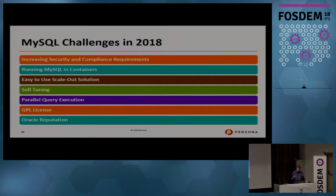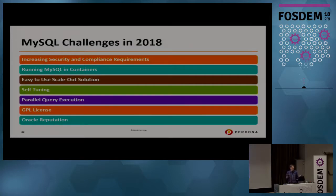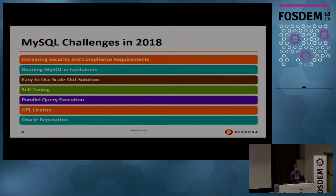We still don't have an easy scale-out solution — MySQL sharding is as painful now as it was 10 years ago. There are some new developments like Vitess designed to make it less painful, but they aren't widely adopted yet. Parallel query execution is still not where it needs to be and is needed now more than ever for MySQL to handle medium-complexity queries more efficiently.